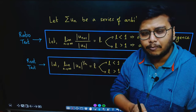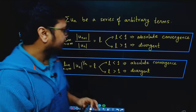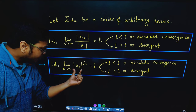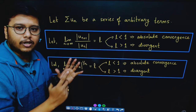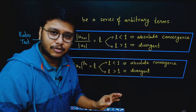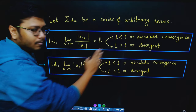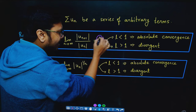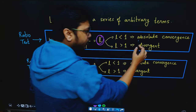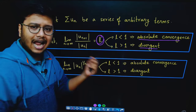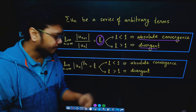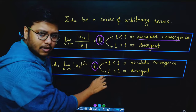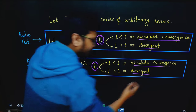These tests are similar to what we've done before for convergence. The only difference is we take the ratio of modulus terms, or the modulus of u_n to the power one over n. For the ratio test, we take the limit of |u_{n+1}/u_n|. If that value L is less than one, absolutely convergent; if L greater than one, divergent; if L equals one, the test fails. Similarly for the root test.